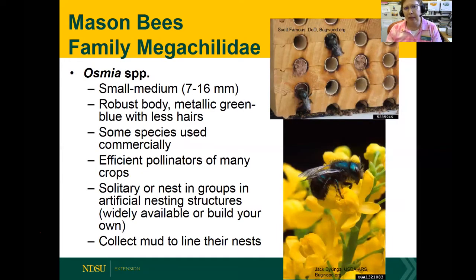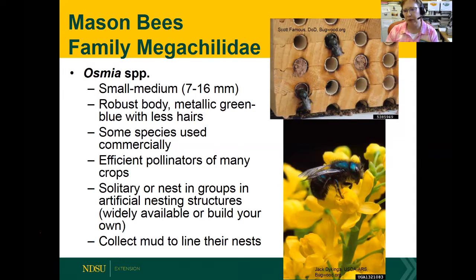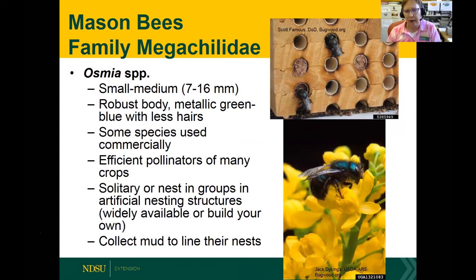Mason bees are also in the Megachylidae family, genus Osmia. This one is also used commercially for apple, cherry, plum, and other tree fruits. You can manage them — they will nest in commercial blocks of wood with drilled holes, using mud to line their nests. They're very efficient pollinators in crops. Some of you are probably familiar with the alfalfa leafcutter bee, also in this group — it's not a native species but was introduced into the U.S. for alfalfa and carrot seed production as pollinators.